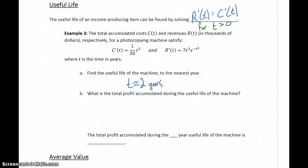Then what we want to do is find the total profit accumulated during the useful life of the machine. That would mean finding our profit function evaluated at two years minus our profit function evaluated at zero years. We don't have the profit function, but we do know that profit is revenue minus cost. So marginal profit would be marginal revenue minus marginal cost.